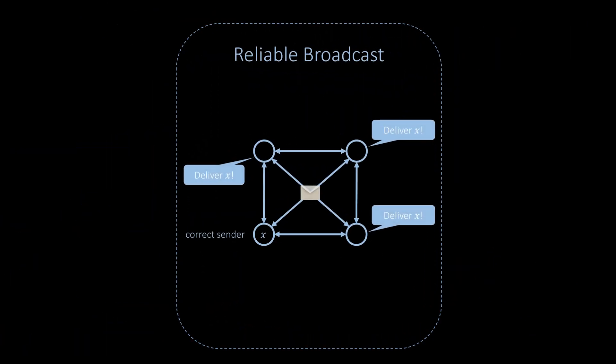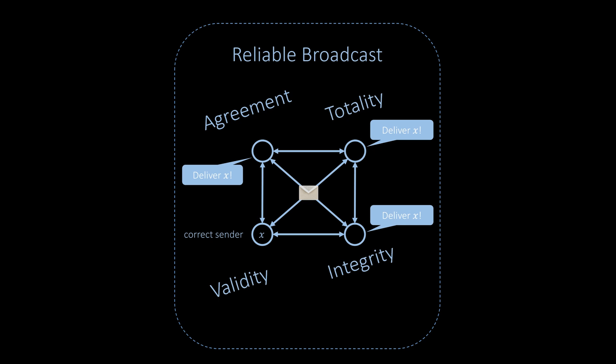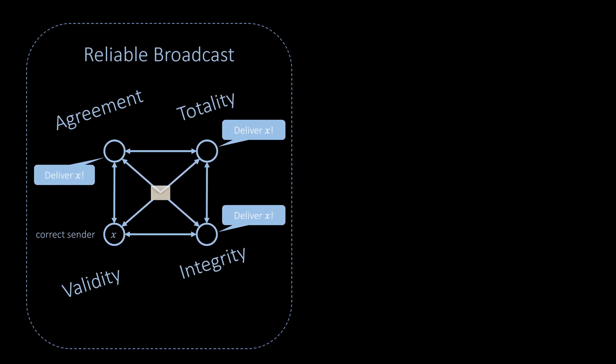Let's summarize what we've learned. We saw that a simple broadcast is not sufficient in case of failures. We introduced reliable broadcast as a solution and defined that a reliable broadcast algorithm must have the four properties: agreement, totality, validity, and integrity. After defining the problem, we studied Bracha's algorithm and showed that it is a correct reliable broadcast algorithm that works even in the presence of worst-case failures as long as the number of failures is strictly less than a third of the number of nodes.